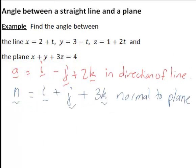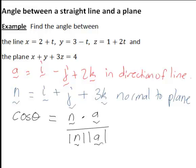So the next thing we can do is find the angle theta between the vector in the direction of the line and the normal to the plane. Using cos theta equal to n dot a divided by the magnitude of n times the magnitude of a, that will give the cosine of that angle and we can hence use that to find the angle theta between the normal and the line.